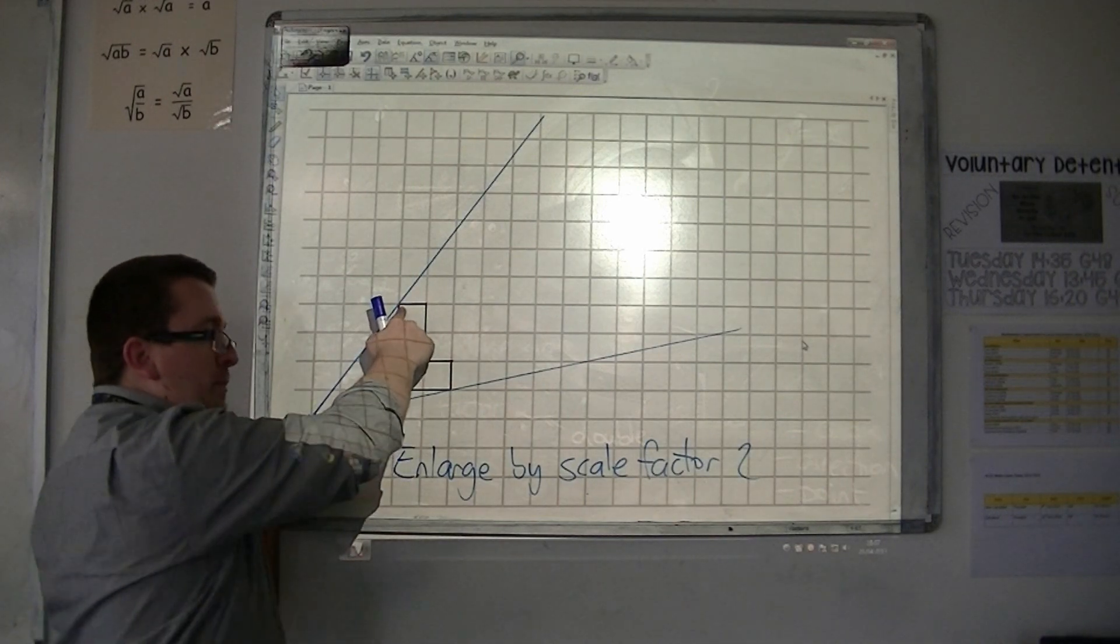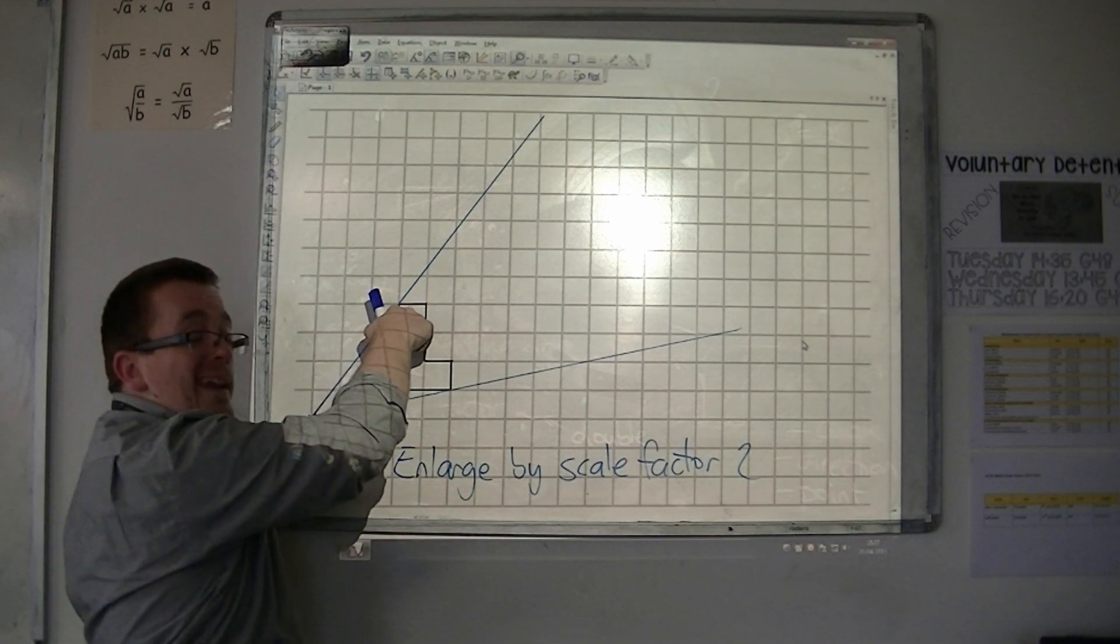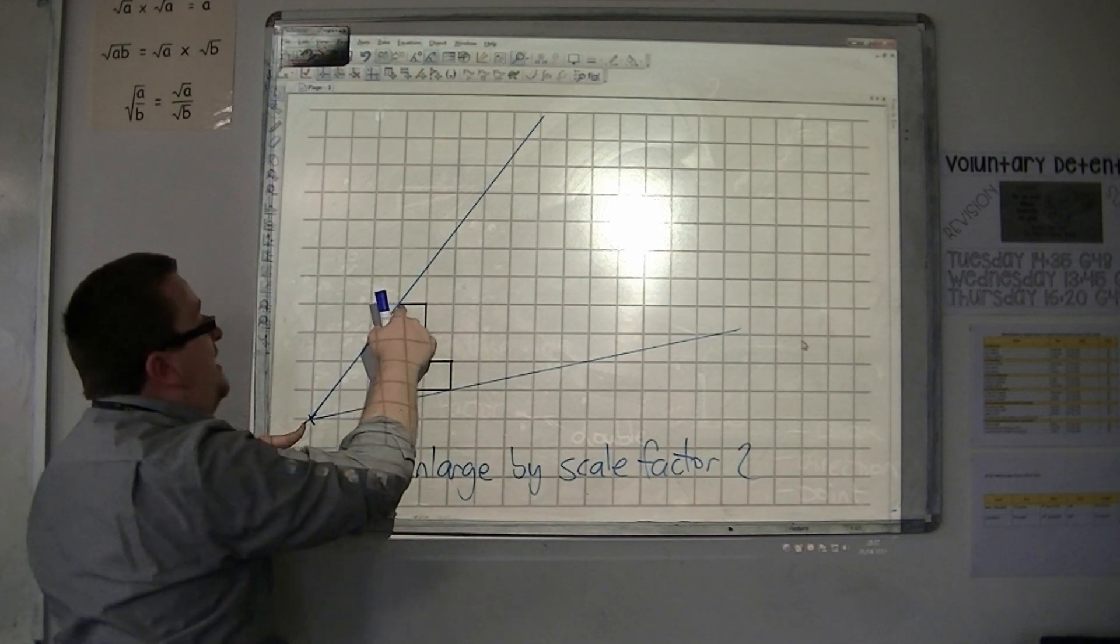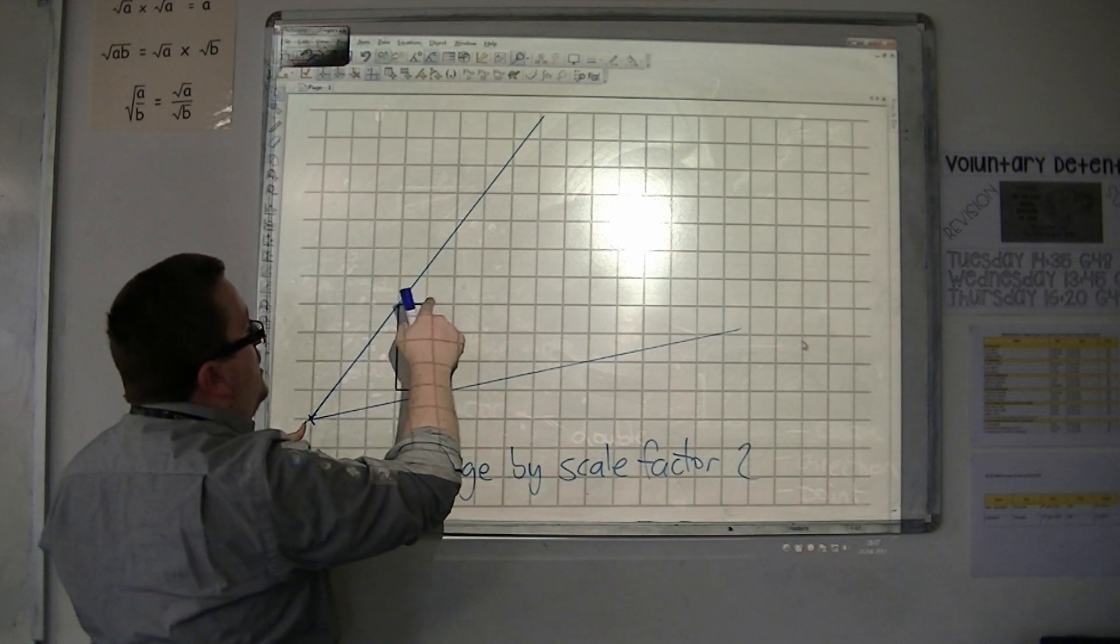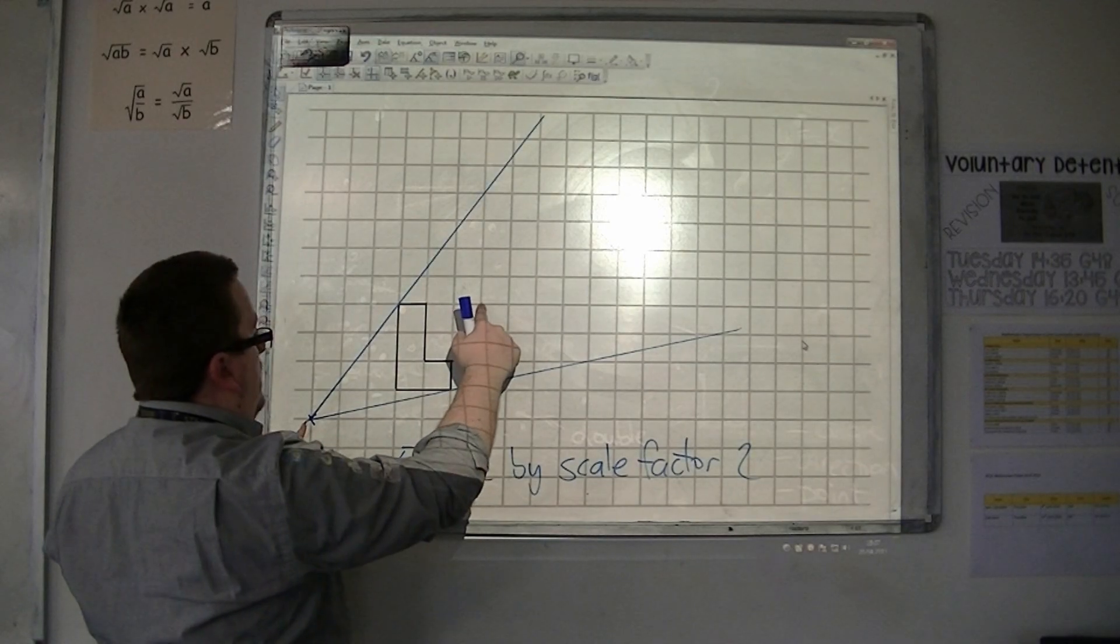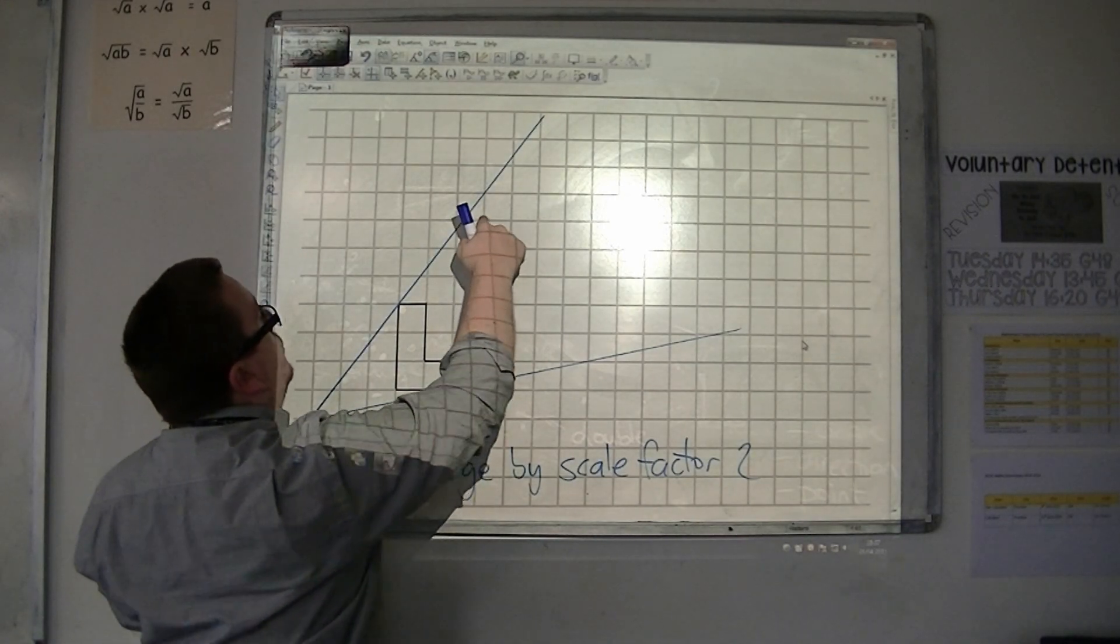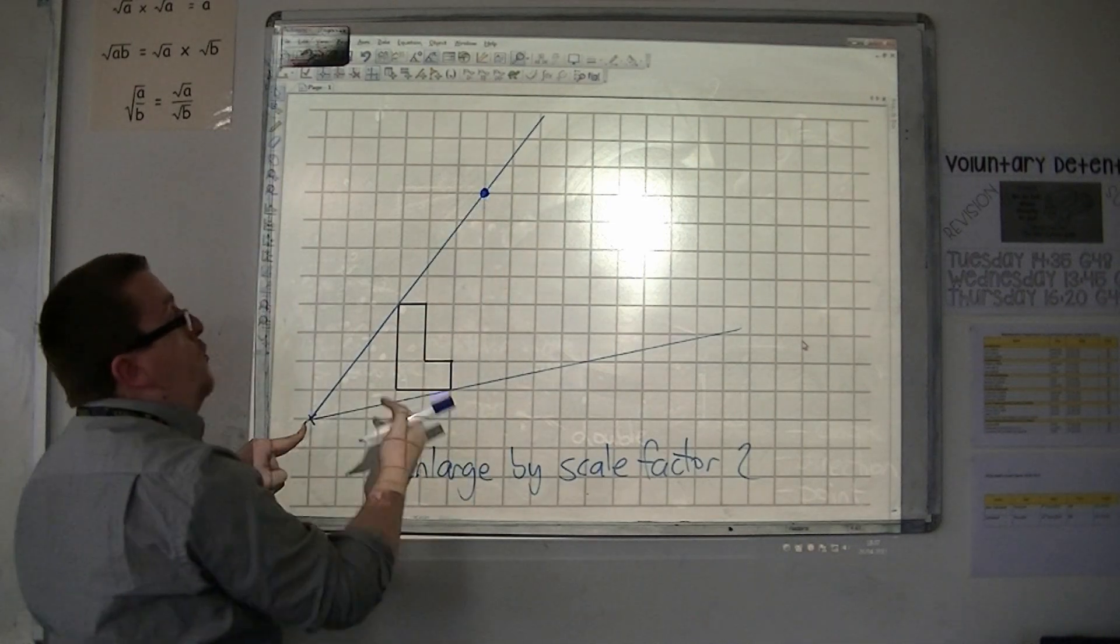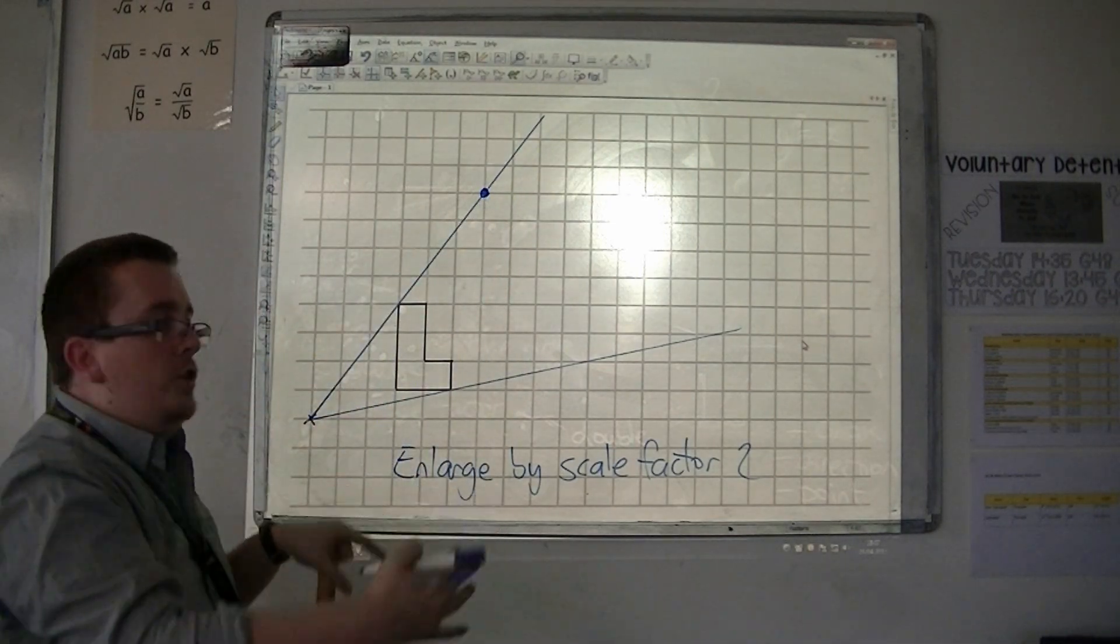Now because we're enlarging by a scale factor of 2, all lengths must be doubled. So I need to do it again. So I need to double that. So three along and four up. And you should find the point that you draw is on the grid that you're drawing.